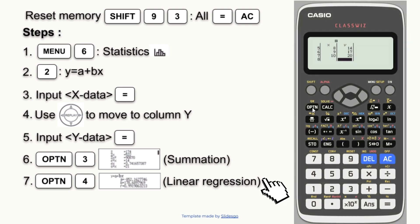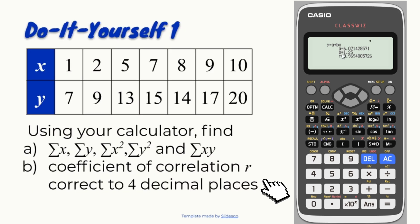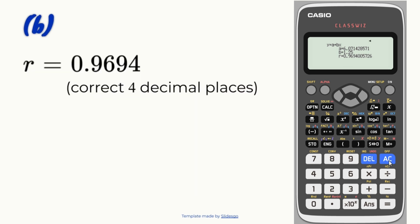The final step: press option button, then 4 for linear regression. Now we can answer question B: find coefficient of correlation R correct to 4 decimal places, which is 0.9694.